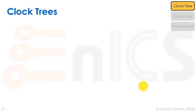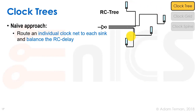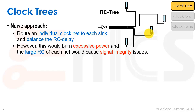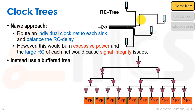The naive approach to a clock tree would be to route one single net to each sink and balance the RC of those nets, ensuring each line has the same exact length. But that's not a good idea — it would burn excessive power because each line would have very large capacitance, there would be lots of signal integrity issues with lines running next to each other and next to signals, and it would take up a huge amount of routing resources.